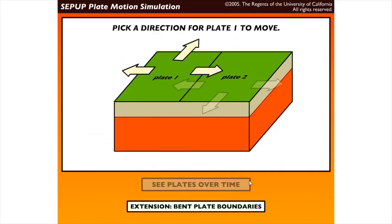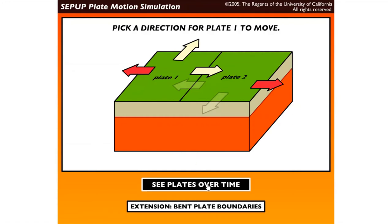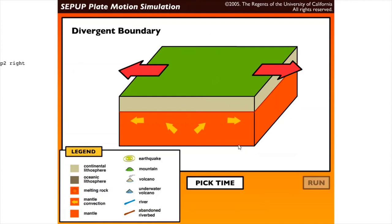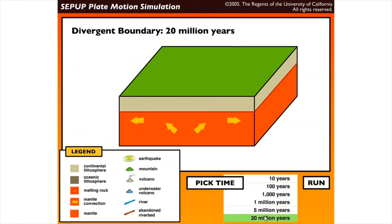Next, let's have divergent boundary. So divergent, the plates move away. So let's choose here and let's see what will happen. So this is the divergent boundary. Again, let's pick 20 million years and run.